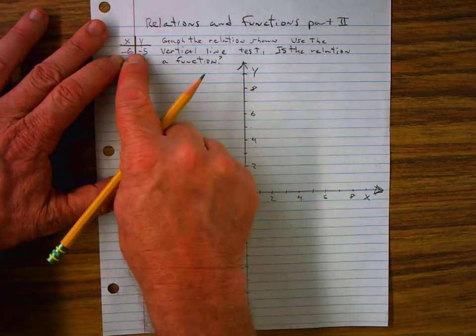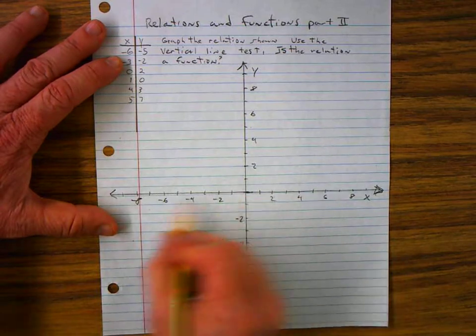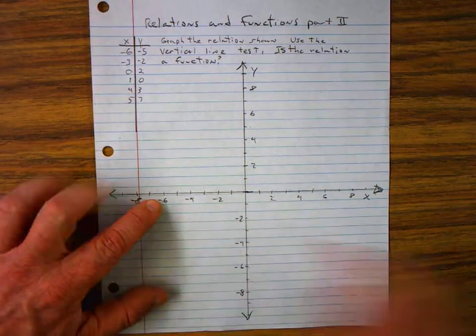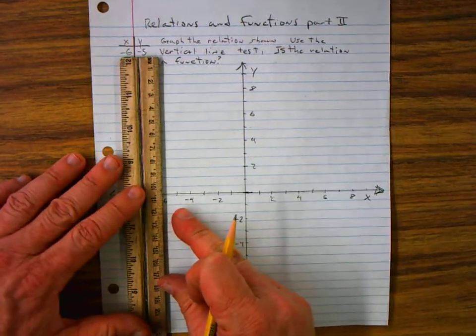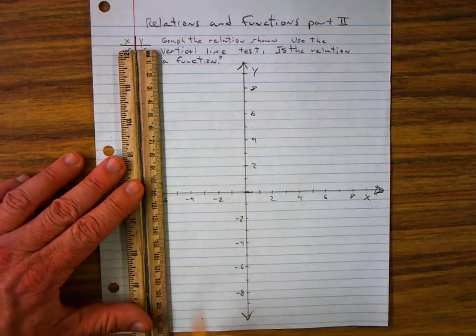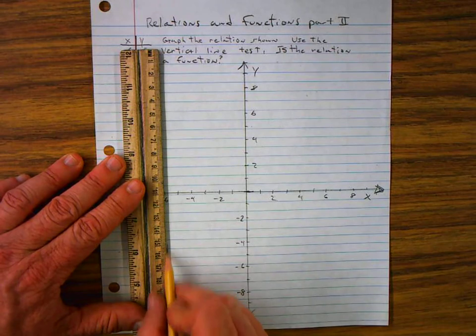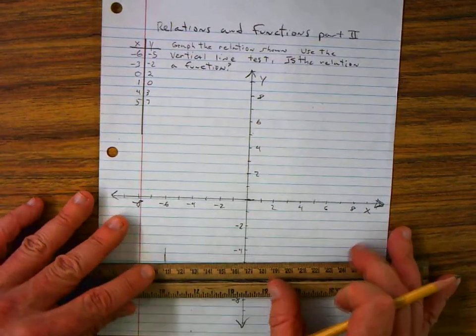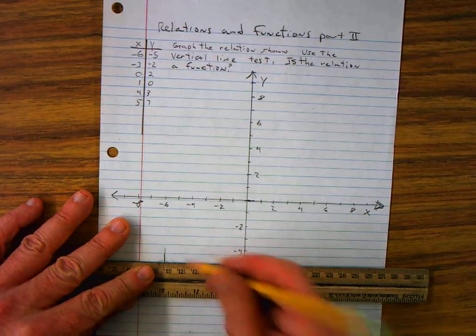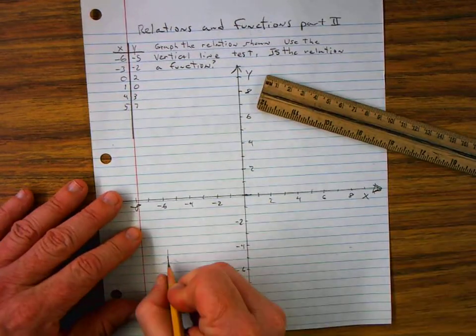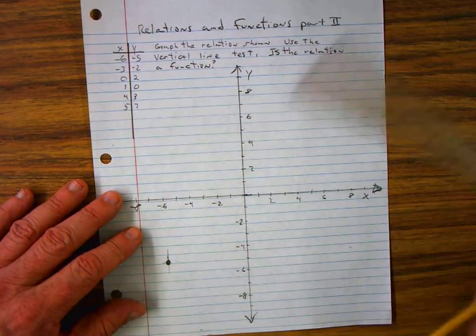Starting with this first ordered pair, negative 6. That's my X value. And it goes down negative 5. So I'll use my ruler as a guide. And negative 5, negative 6 going over X. And negative 5 going Y. So that's my first point, my first ordered pair.